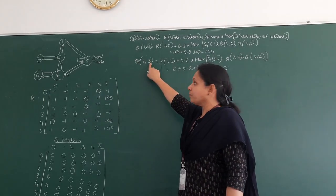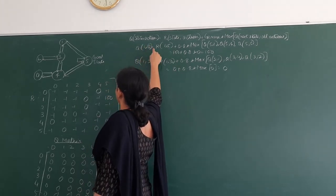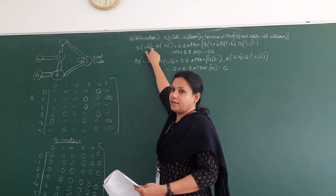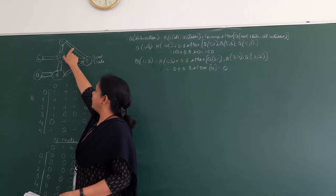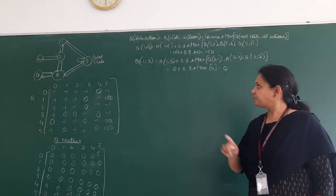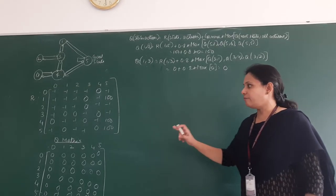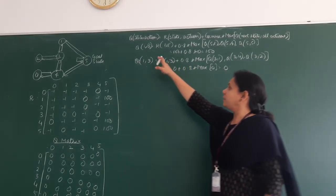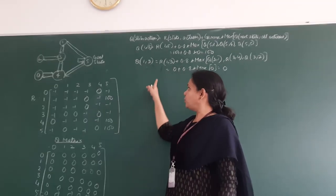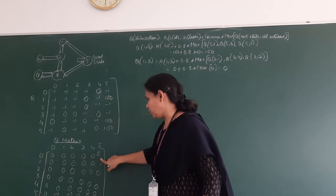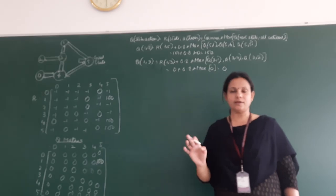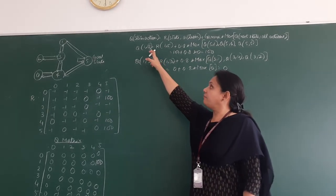Which is the next state? If I take 3, from 3 the next state is 5. State 5 means I have reached the goal state already. If I take 5 as the option, from 5 I can go to 1, to itself, or to 4. Since 5 is the goal state, once I reach it I have to update my Q matrix. Q(1,5) is 100 and Q(1,3) is 0. So this is one cycle completed, taking states 1 and 5.